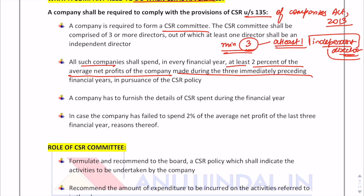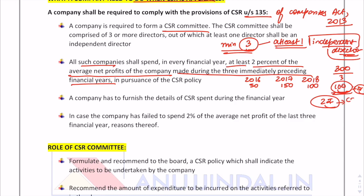Once the CSR committee is formed, all such companies shall be required to set aside every financial year at least two percent of the average net profits made during the three immediately preceding financial years for CSR activities mentioned in Schedule 7 of the Companies Act 2013. For example, if net profits in 2016, 2017, and 2018 were 50, 150, and 100 rupees respectively, the average is 100, and two percent of that — two rupees — will be set aside.